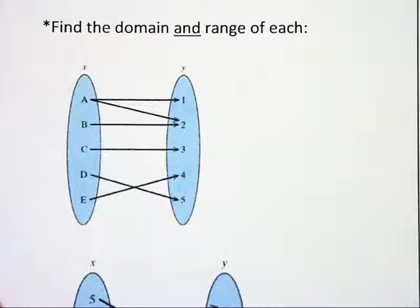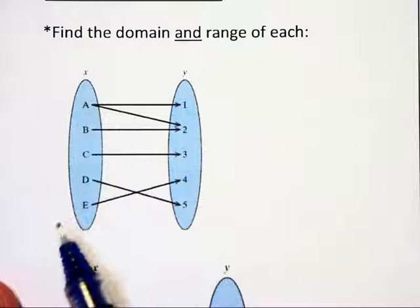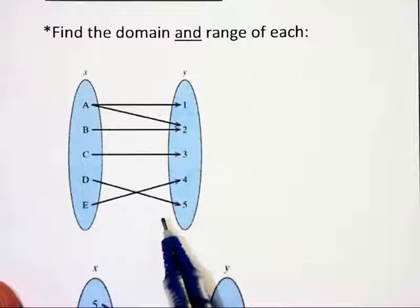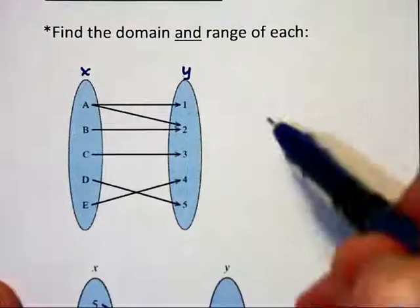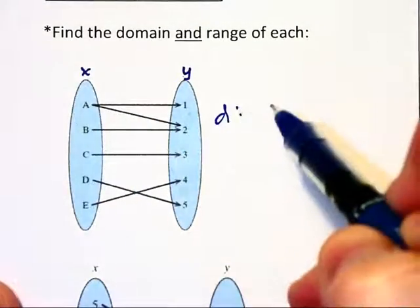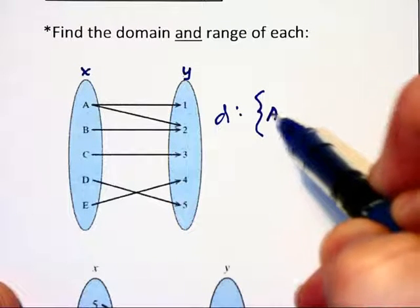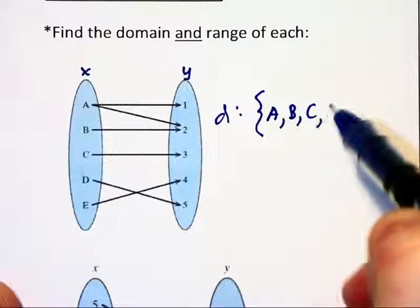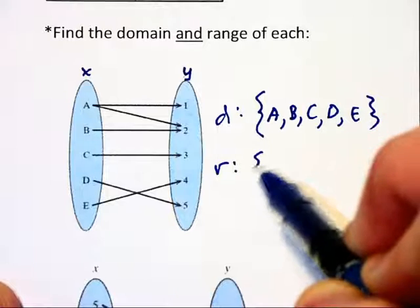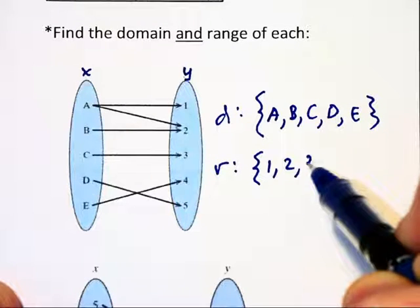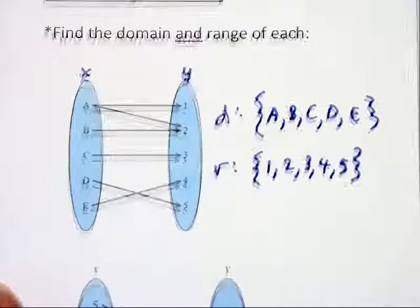Now, let's look at this in a different sort of way. The domain and the range can be thought of as sets of numbers, sets of input values and output values. And so the domain of this first graphing or mapping would be the values A, B, C, D, and E. Whereas the range would be the y values 1, 2, 3, 4, and 5. Notice that we do not write duplicates twice.